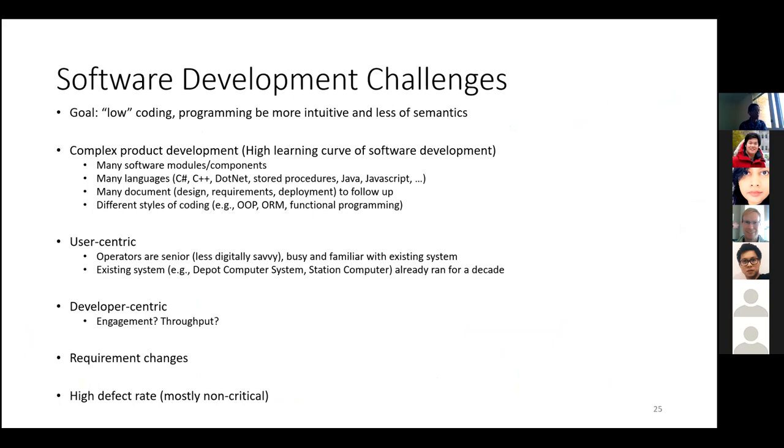One of the future goals for the development team and the whole fare collection team is low-code programming to be more intuitive and less semantic. Because for such medium and large-scale projects, it involves a lot of complex product development and it also has a high learning curve of software development. For example, there are many software modules and components in each device, such as the station computer, the card reader, the automated gates, ticket-vending machines, and so on. Many languages, such as C#, C++, .NET, JavaScript, and so on, and many documents, including functional documents, design documents, requirements to follow up, and also a lot of styles of coding from developers. Some human-centric issues we have before, such as operators are less digitally savvy, and they are busy, they are familiar with the old existing system. So during the two major projects I was involved where it has existing systems, there were several rounds of discussion, and sometimes we have to modify our existing functionality or even redesign existing functions in order to incorporate new functions. Developer-centric, whether the tools provided help to improve engagement and also improve throughput, is also a question. Requirement changes and high defect rates, such as mostly non-critical defects.